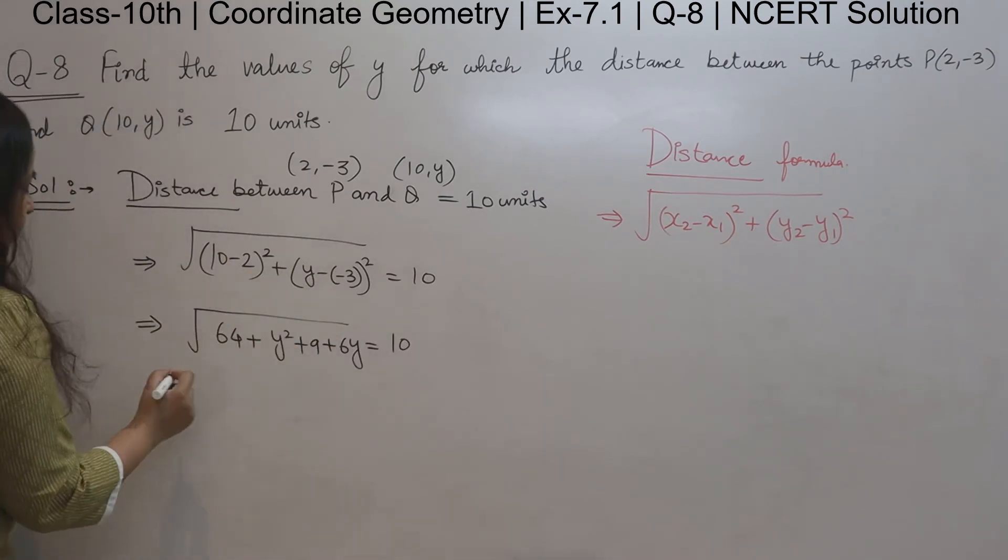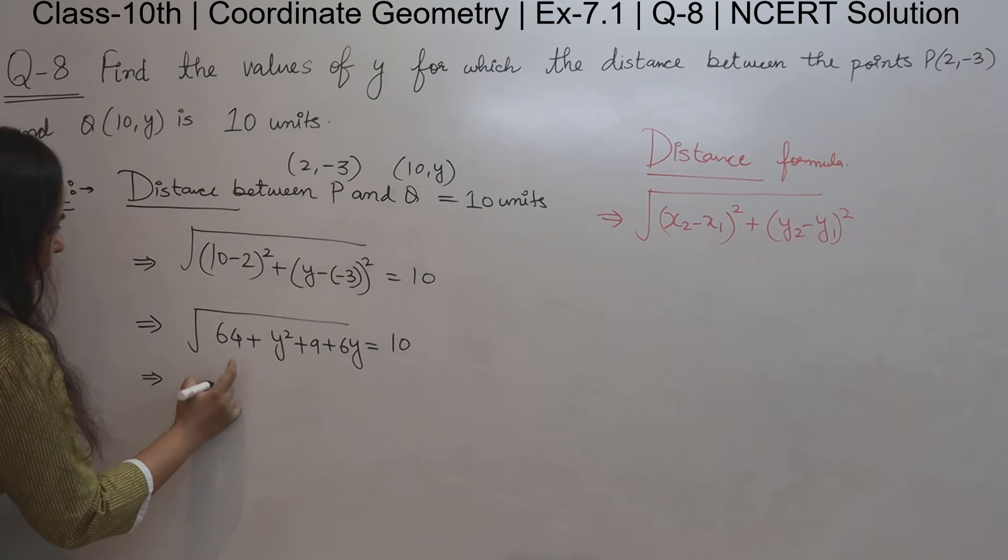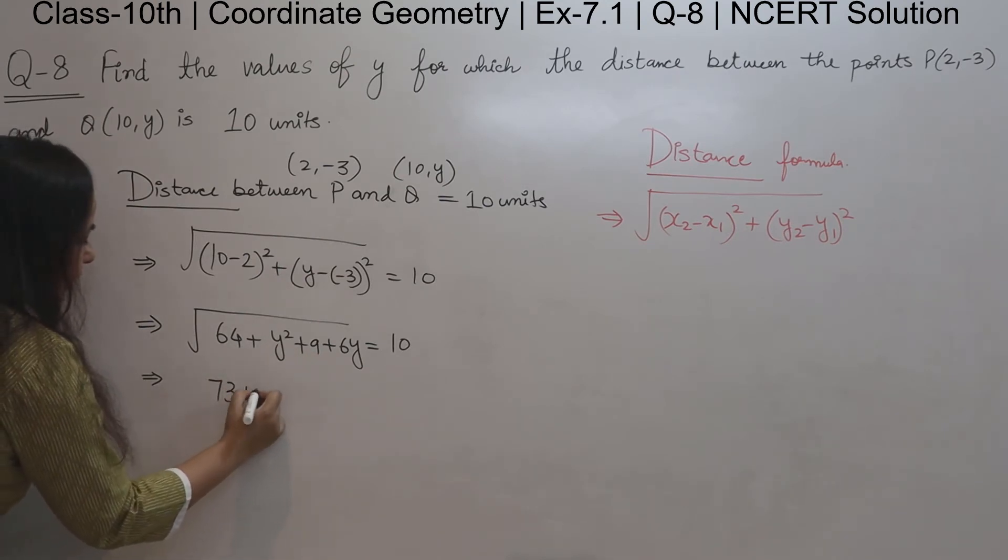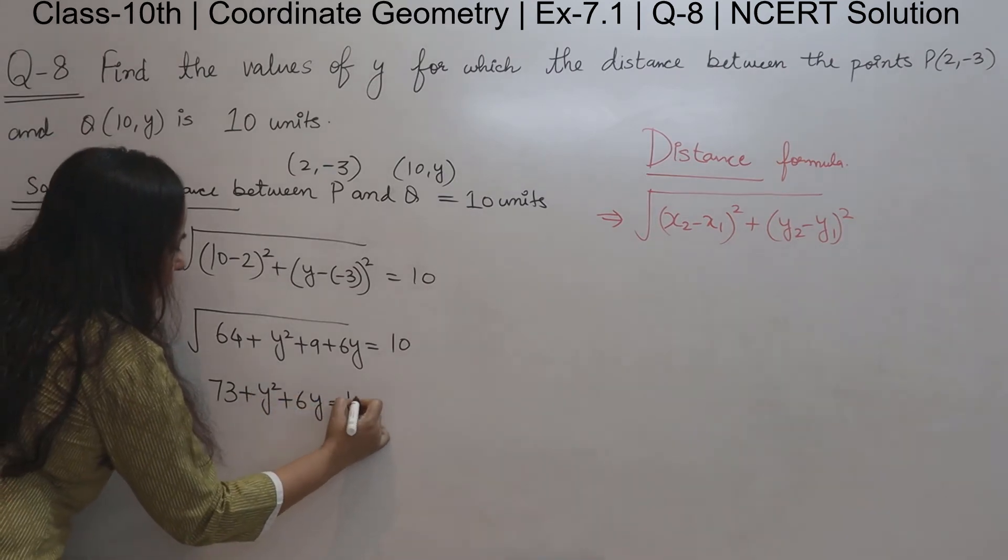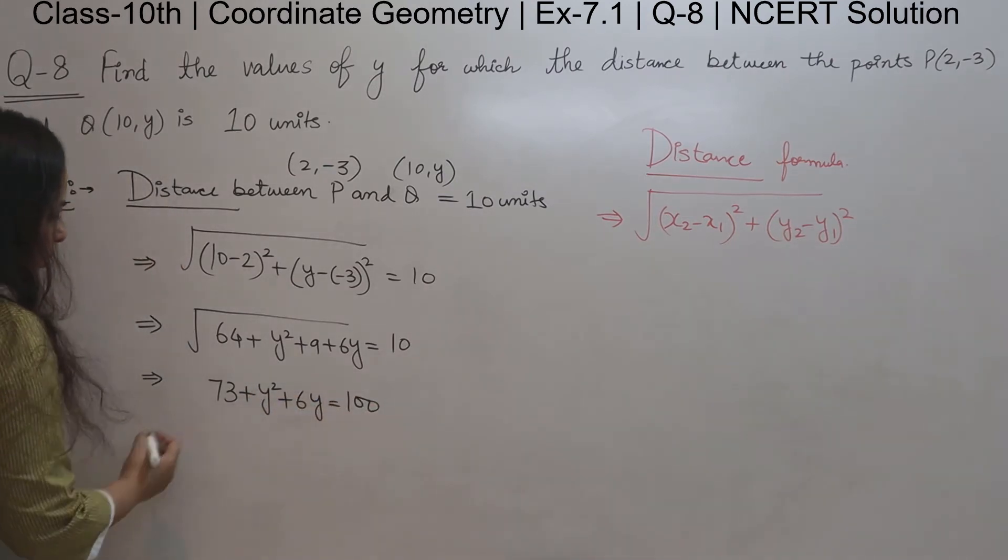Under root, we can square both sides, then we get 64 plus 9 which is 73 plus y squared plus 6y. 10 squared is 100.